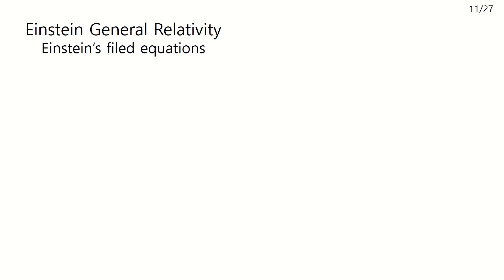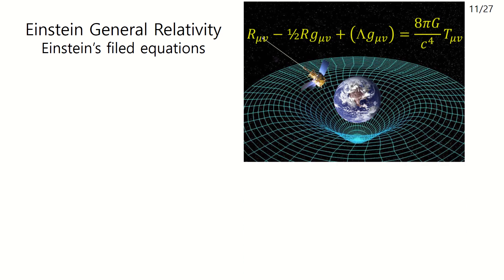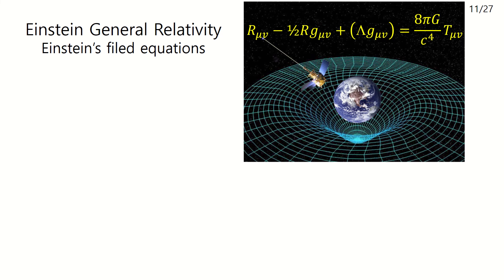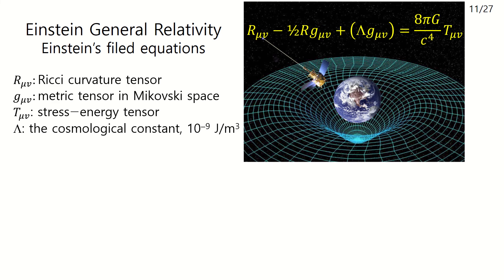Relativity has something in common with our vacuum paradigm, so let's briefly learn about this. It is expressed in mathematical form. They are called Einstein's field equations. As you can see, they are hard to understand. We see some unfamiliar terms: the Ricci curvature tensor, and Minkowski space.